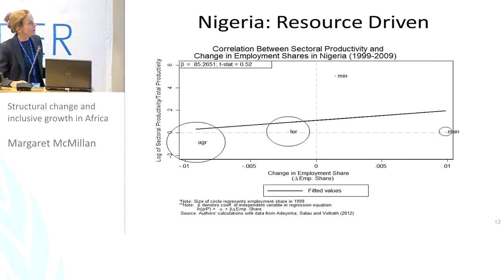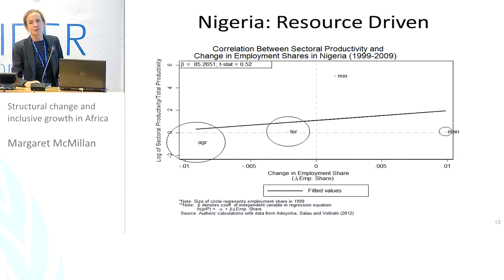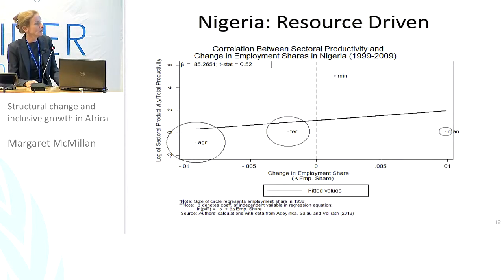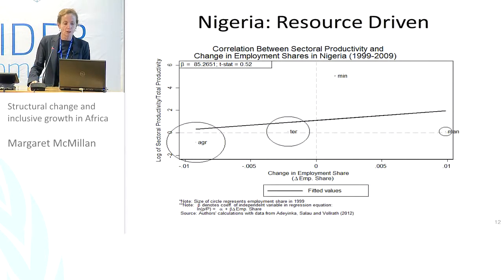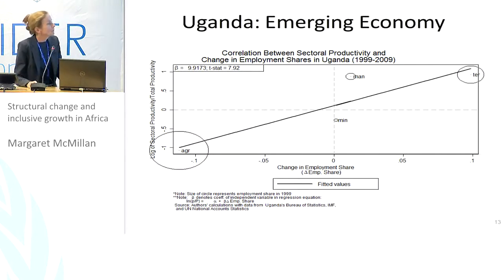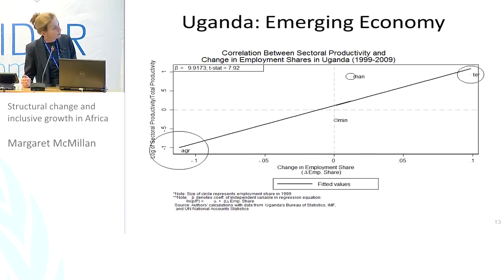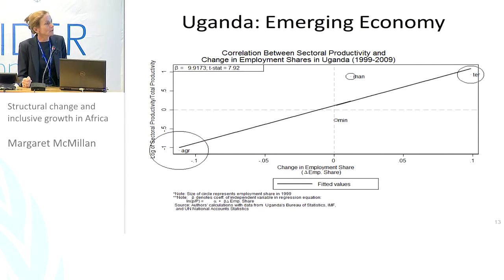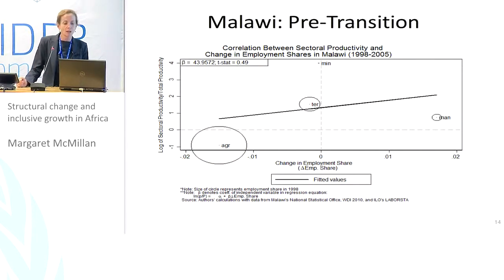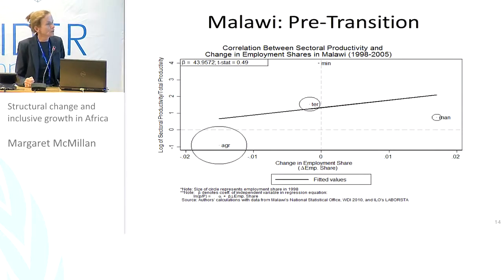On the other hand, we have countries like Nigeria that are heavily resource-dependent. Along the horizontal axis, changes in employment shares are minuscule — there's been some shift out of agriculture into manufacturing, but these are small, and the majority of people still work in the agricultural sector. In Uganda, you actually see pretty substantial structural change — a large movement out of agriculture, primarily into services but also into manufacturing. In Malawi, what we call a pre-transition economy, the majority of the labor force is still in agriculture with very small changes.